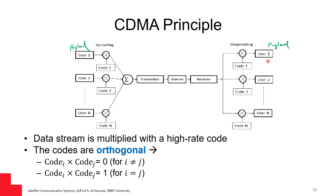What is the limitation of CDMA? The bit error rate will increase as the codes are orthogonal but the channel is not ideal. What happens is that you start having deterioration in the BER when you increase the number of users.